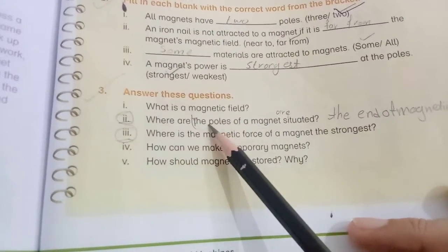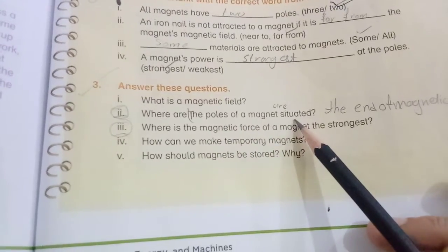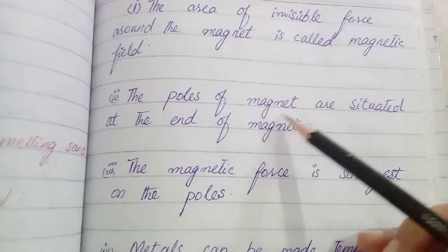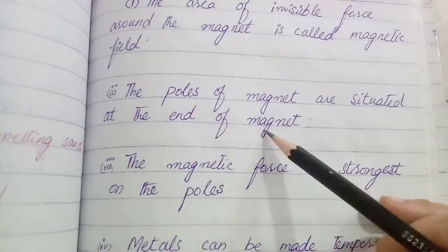Where are the poles of a magnet situated? The poles of magnet are situated at the end of magnet.